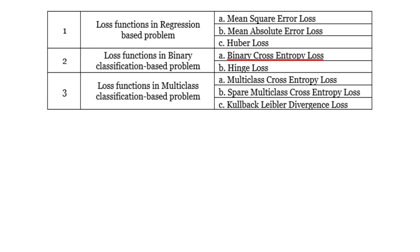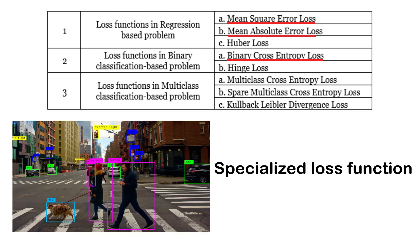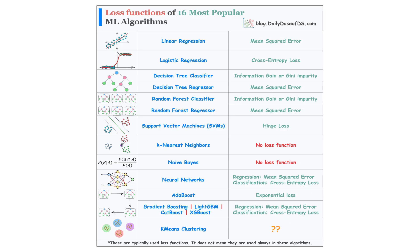Regression usually needs MSE or MAE. For specific problems like ranking or object detection, you'll need specialized loss functions that capture the right objectives. Similarly to choosing the right metrics, choosing the right loss function depends on the objective of your problem — always keep your real-world goals in mind.